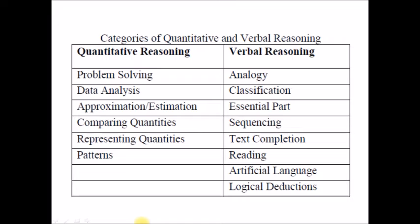For quantitative reasoning, the types of questions are problem solving, data analysis, approximation or estimation, comparing quantities, representing quantities, and patterns. For verbal reasoning, we have analogy, classification, essential part, sequencing, text completion, reading, artificial language, and logical deductions. The video for today will be focusing on analogy.